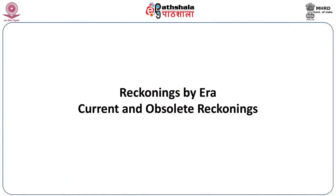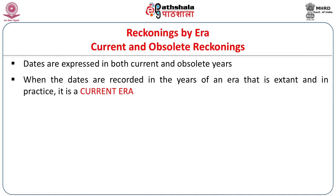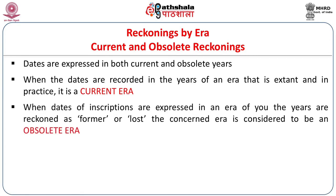The second type of reckoning, and the most widely used in South Asian inscriptions, is reckoning by era. Here we see two different types: one is called current era, and the other is called the obsolete era. When dates are recorded in the years of an era that is extant and in practice, it is a current era. When the dates are expressed in an era of which the years are reckoned as former or lost, the concerned era is called an obsolete era.